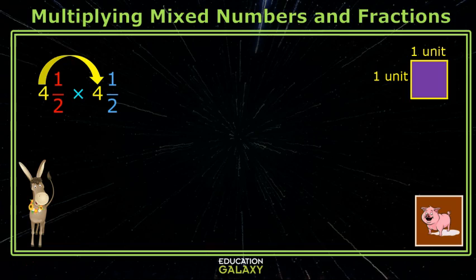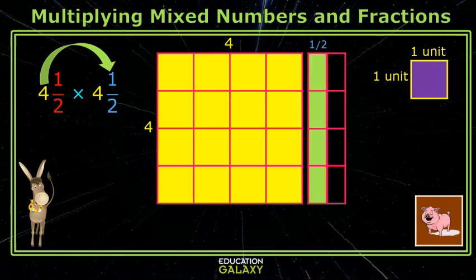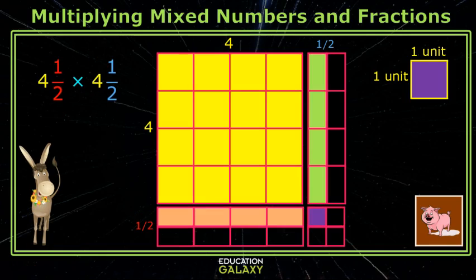First I multiply the four times the four and get sixteen. Then I multiply the four times this half. And then I multiply the red half times the four. And finally I multiply the half times the half. Oh, okay, I get it.